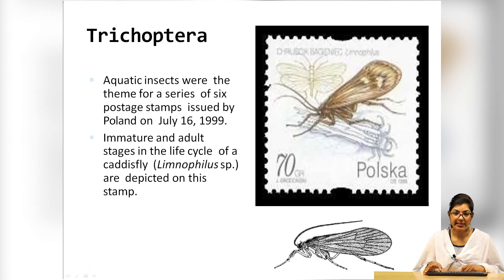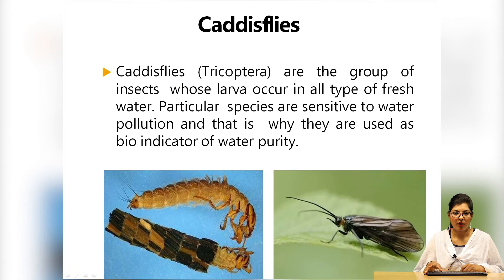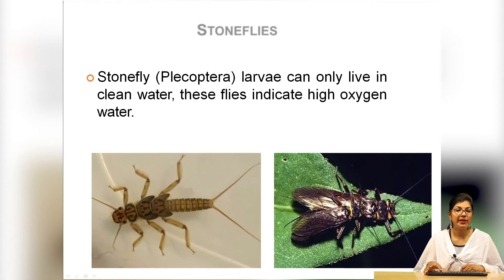Trichoptera are also aquatic insects — they were even the theme for a series of six postage stamps issued by Poland on July 16, 1999, depicting immature and adult stages of the caddisfly life cycle. Caddisflies are a group of insects whose larvae occur in all types of fresh water; particular species are sensitive to water pollution, which is why they are used as bioindicators of water purity.